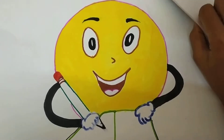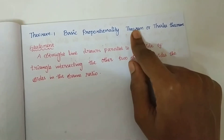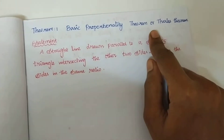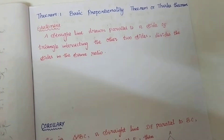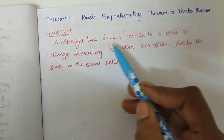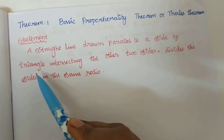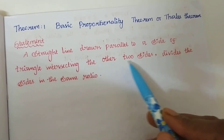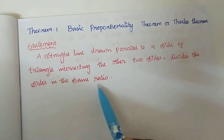Hi students, now we are going to discuss the Basic Proportionality Theorem, also known as Thales' theorem. We already know about this concept but just for introduction I am giving this overview. A line drawn parallel to a side of a triangle intersecting the other two sides divides those sides in the same ratio.